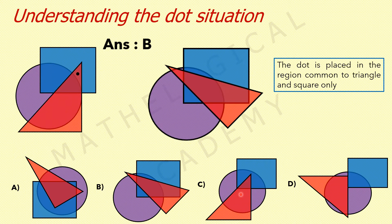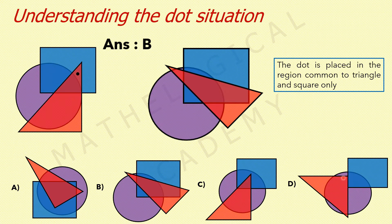Option C: the region which is common between square and triangle also lies in the circle, so this is not the answer. In option D, there is no common region between triangle and square at all. So our answer is B.